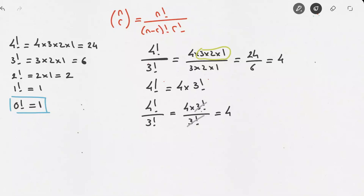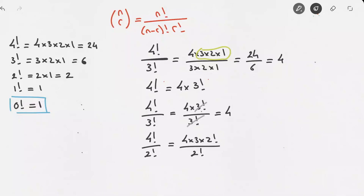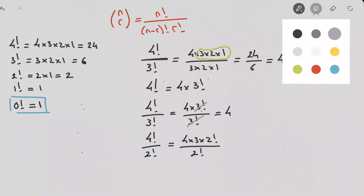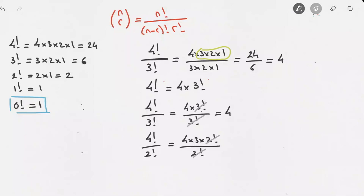Quite often it won't be as simple as 4! over 3! — the gap between the two numbers could be bigger than 1. For instance, with 4! over 2!, the trick is to see that this equals 4 times 3 times 2! over 2!. We simplify the factorials and are left with 4 times 3, which equals 12.